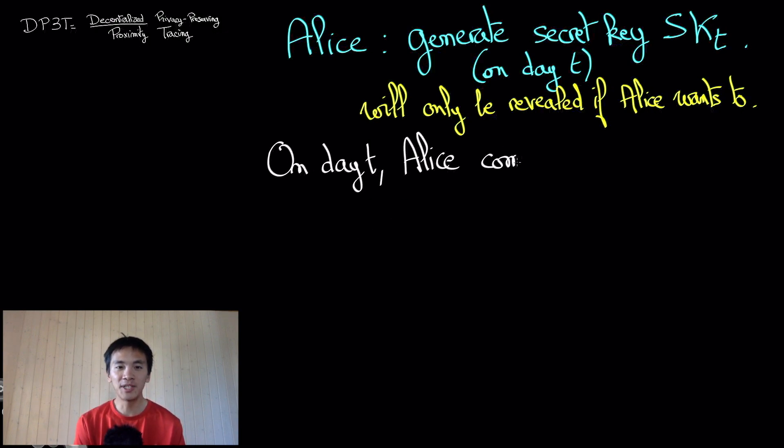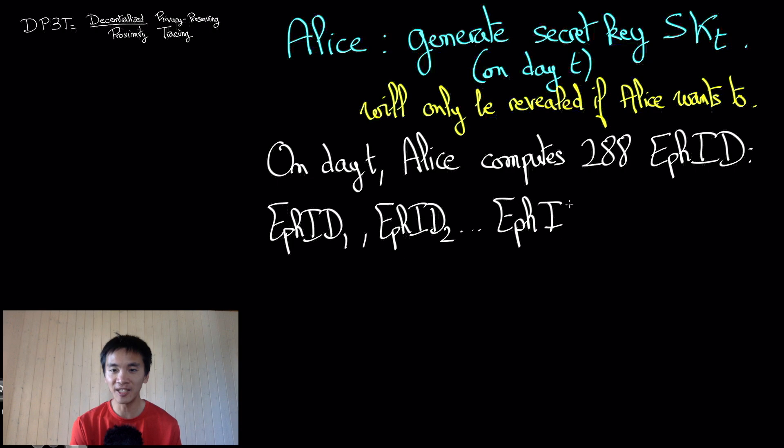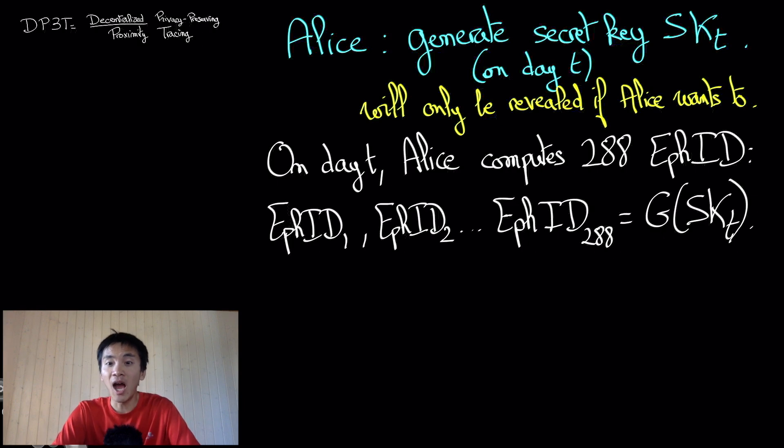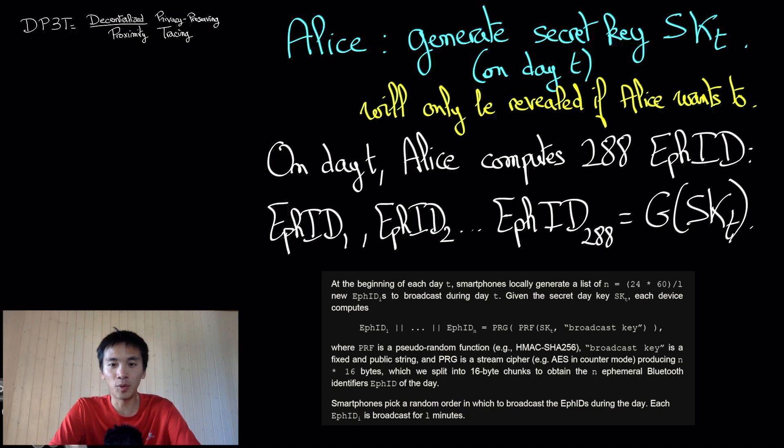Now, on date T, Alice will derive 288 ephemeral identifiers from her secret key SK using a pseudorandom generator G that uses SK as its seed. In other words, an eavesdropper, let's call her Eve, that hears one ephemeral identifier but does not know the secret key SK would be clueless about what the other ephemeral identifiers may be. But given SK, it is straightforward to compute the ephemeral identifiers as they equal G. The precise value of G and the size of the ephemeral identifiers are provided in DP3T's white paper. But I won't dwell too much on these details in this video.